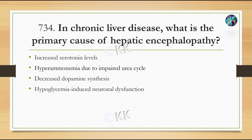In chronic liver disease, what is the primary cause of hepatic encephalopathy? Option A, increased serotonin levels. Option B, hyperammonemia due to impaired urea cycle. Option C, decreased dopamine synthesis. Option D, hypoglycemia-induced neuronal dysfunction. The correct option is Option B, hyperammonemia due to impaired urea cycle.